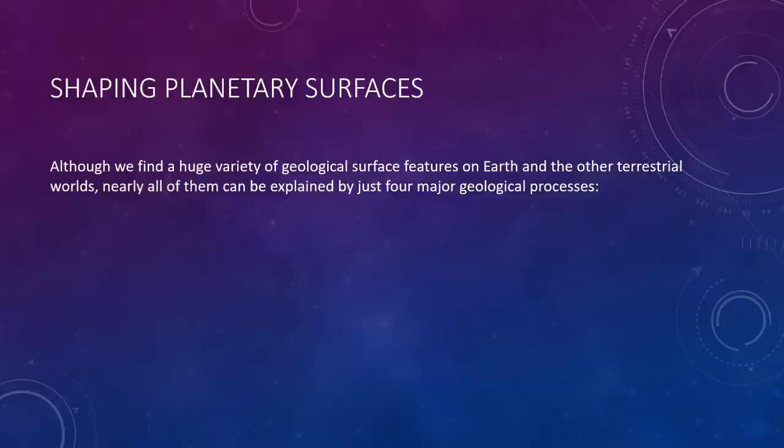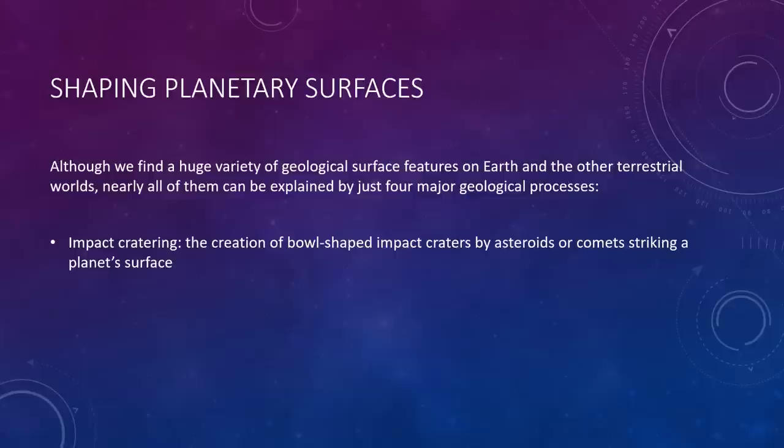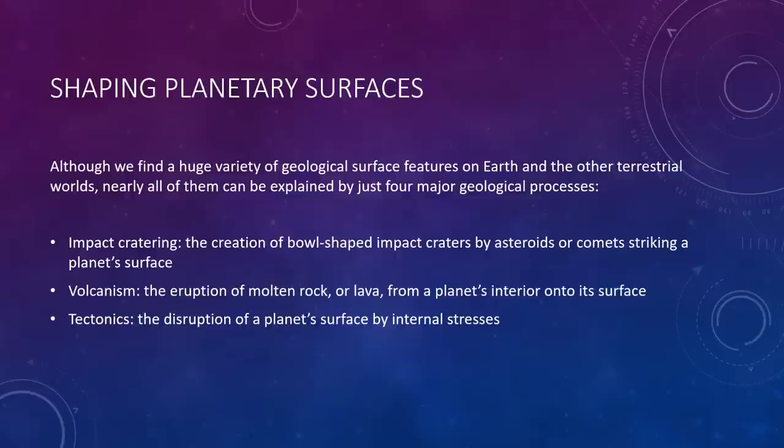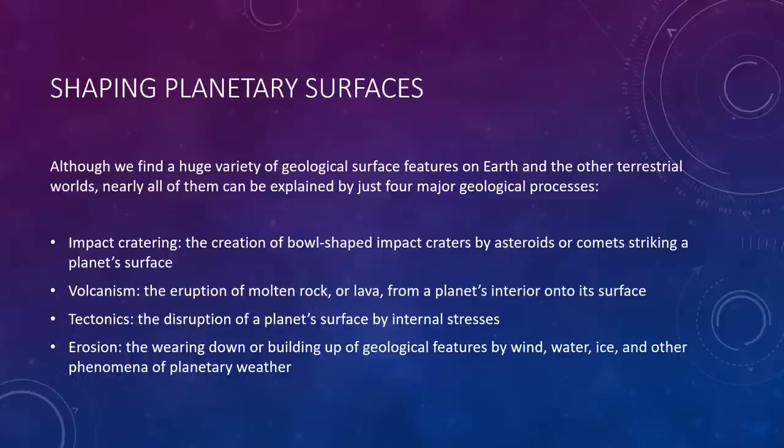Now that we have discussed how Earth and other terrestrial worlds work on the inside, we are ready to turn to their surfaces. Surface features tell us a great deal about the histories of the planets. Although we find a huge variety of geological surface features on Earth and the other terrestrial worlds, nearly all of them can be explained by just four geological processes: First, impact cratering—the creation of bowl-shaped impact craters by asteroids or comets striking a planet's surface. Second, volcanism—the eruption of molten rock or lava from a planet's interior onto its surface. Third, tectonics—the disruption of a planet's surface by internal stresses. And fourth, erosion—the wearing down or building up of geological features by wind, water, ice, and other phenomena of planetary weather.